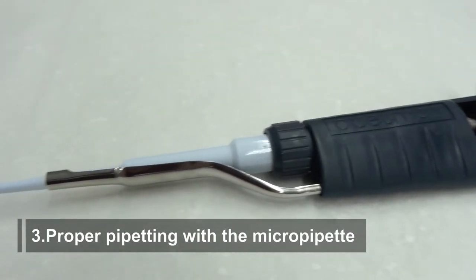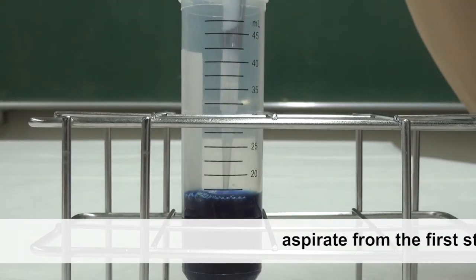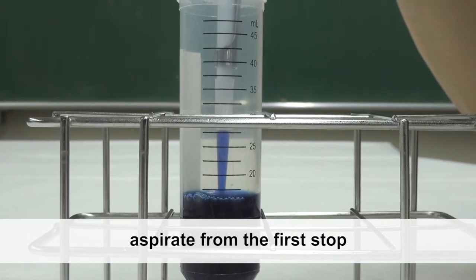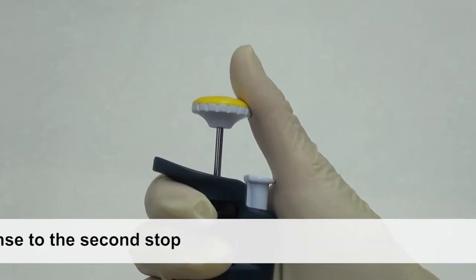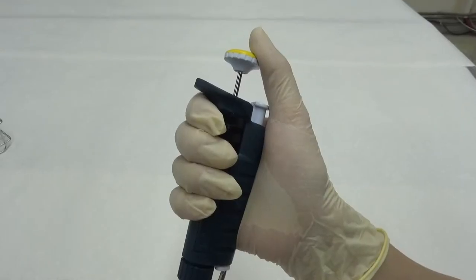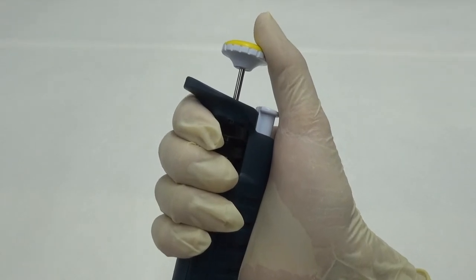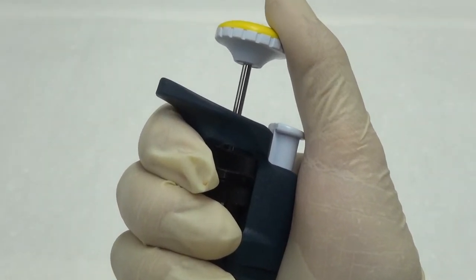Proper pipetting with the micropipette: A pithy formula—aspirate from the first stop, dispense to the second stop and slide a little. Now I will introduce the proper pipetting technique stepwise using the P200 as an example.